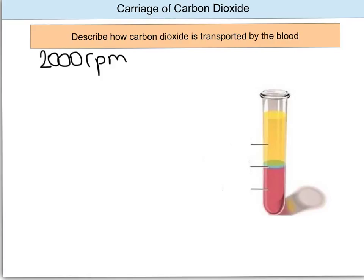5% of carbon dioxide carried by our blood is carried in the plasma, and the plasma dissolves the carbon dioxide directly. So what about the other 95%?